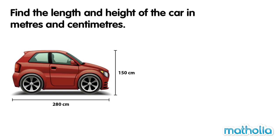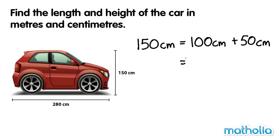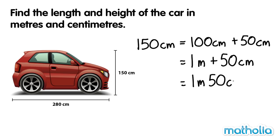Find the length and height of the car in metres and centimetres. The height of the car is one hundred and fifty centimetres. We can write this as one hundred centimetres plus fifty centimetres. We know that in one metre there are one hundred centimetres. So we can write one hundred and fifty centimetres is equal to one metre plus fifty centimetres. One hundred and fifty centimetres equals one metre fifty centimetres. The height of the car is one metre fifty centimetres.